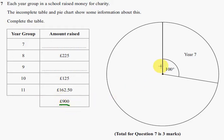360 degrees in the circle represents £900. Now, we know for Year 7s there's 100 degrees worth of money. We don't know how much that is at the moment. All we do know is 360 degrees represents all the money, which is £900. So I want to find how much money is 1 degree worth.